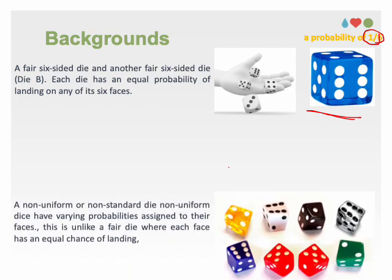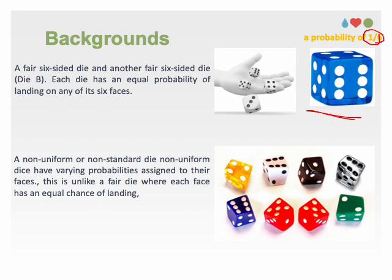I define now the non-uniform or non-standard die, which is a type of dice that not all sides have an equal chance of being rolled. Non-uniform dice can have various configurations and are often used in specific games or probability experiments where different probabilities are desired. Here you can see, for example, a table containing probability of each side. It's not uniformly distributed here.